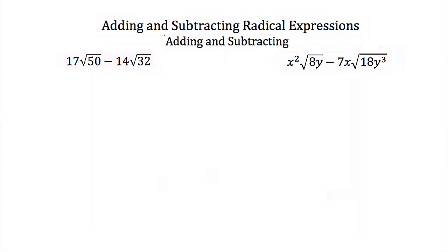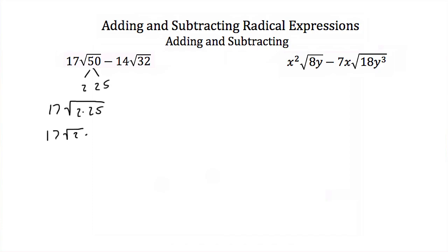When subtracting radical expressions with different radicals, the same rules apply — we need to simplify our radicals to get like radicals. Here we have 17 times the square root of 50 minus 14 times the square root of 32. For the square root of 50, I can break it into 2 and 25. So this is 17 times the square root of 2 times 25, or 17 times the square root of 25 times the square root of 2. The square root of 25 is 5, and 5 times 17 is 85, giving us 85 square roots of 2.